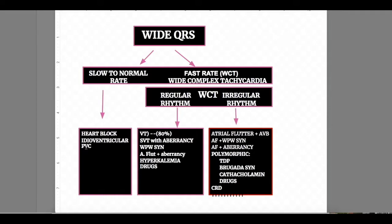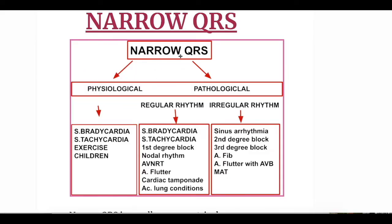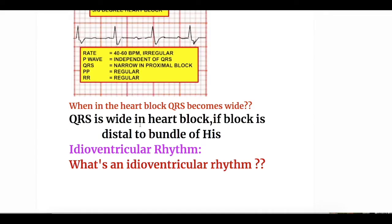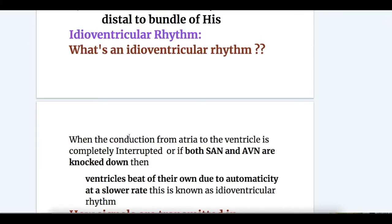Normally, heart block causes narrow QRS complexes. In narrow QRS complexes, regular rhythm is caused by first degree heart block, and irregular rhythm narrow QRS is caused by second and third degree heart block. But if the heart block is at a distal level below the bundle of His, then it causes wide complex QRS. When QRS is wide in heart block, the block is distal to the bundle of His.